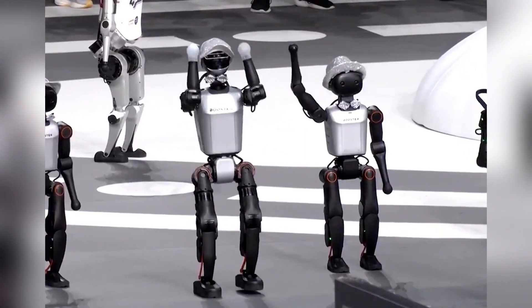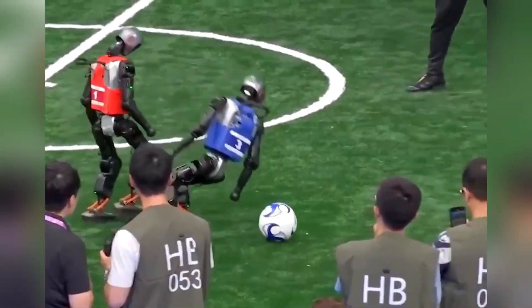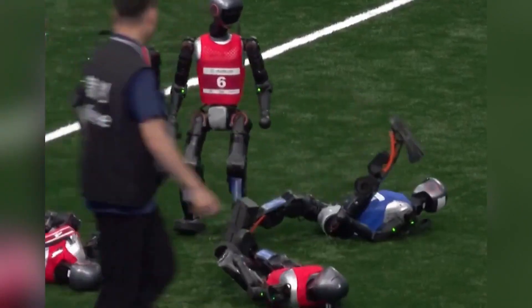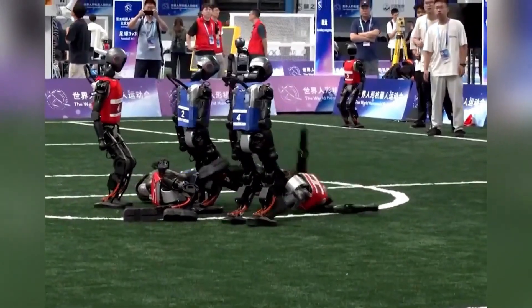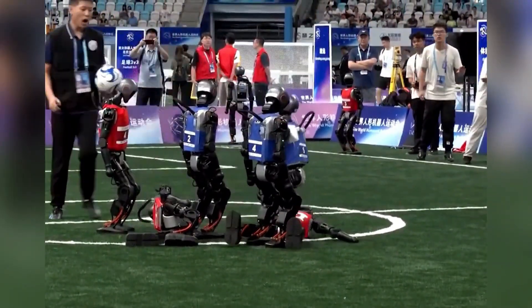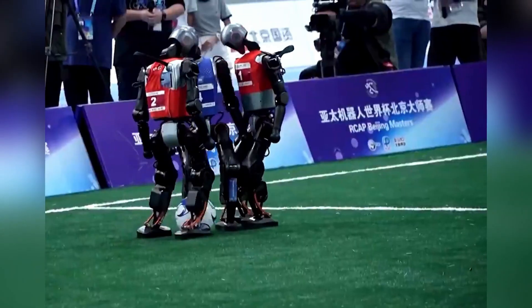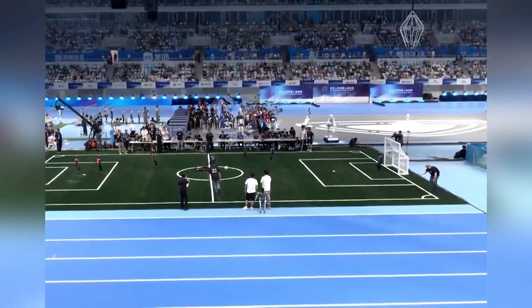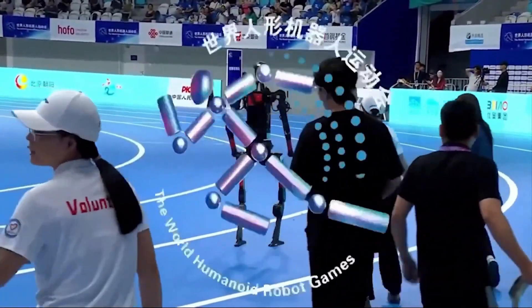That's what made this event so important. Unlike the polished demo videos companies love to release, the humanoid Olympics put robots in an uncontrolled environment, with pressure, unpredictability, and global attention. It stripped away the editing and showed robotics as it really is, an exciting, messy work in progress. And it wasn't just about showing the public. For the engineers, every stumble and every success was valuable data. Why did one robot balance better than another? Why did one succeed at sorting medicine while another failed? These answers will feed directly into the next generation of humanoid AI systems.